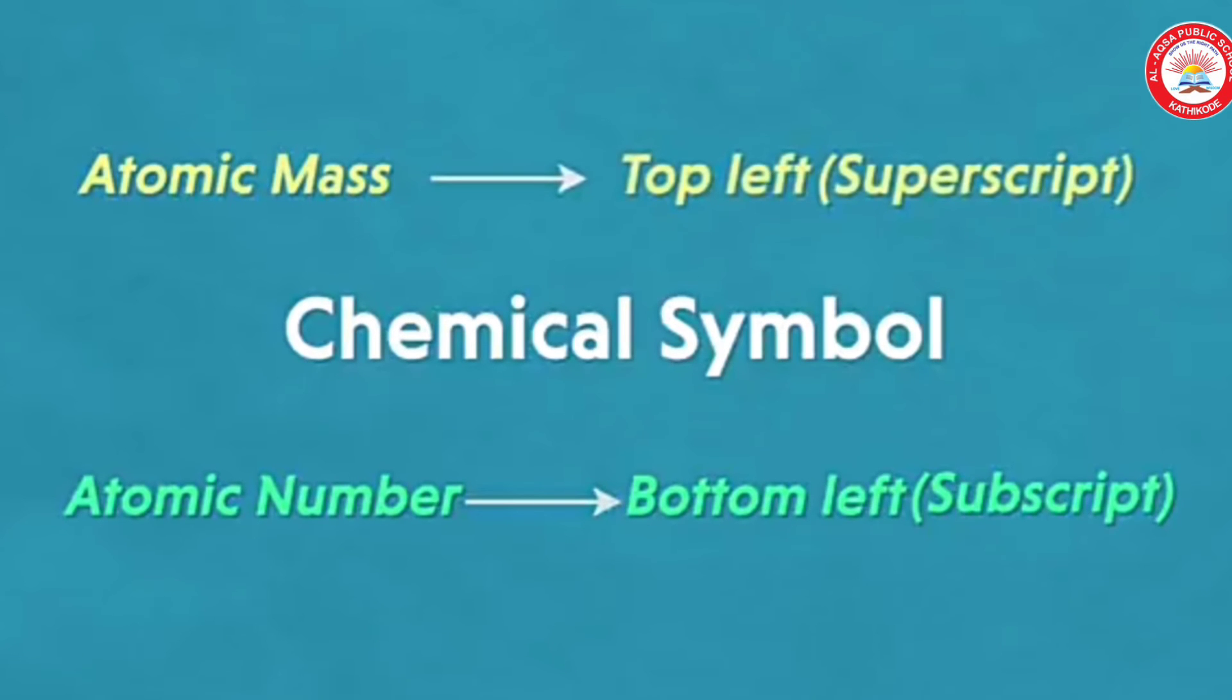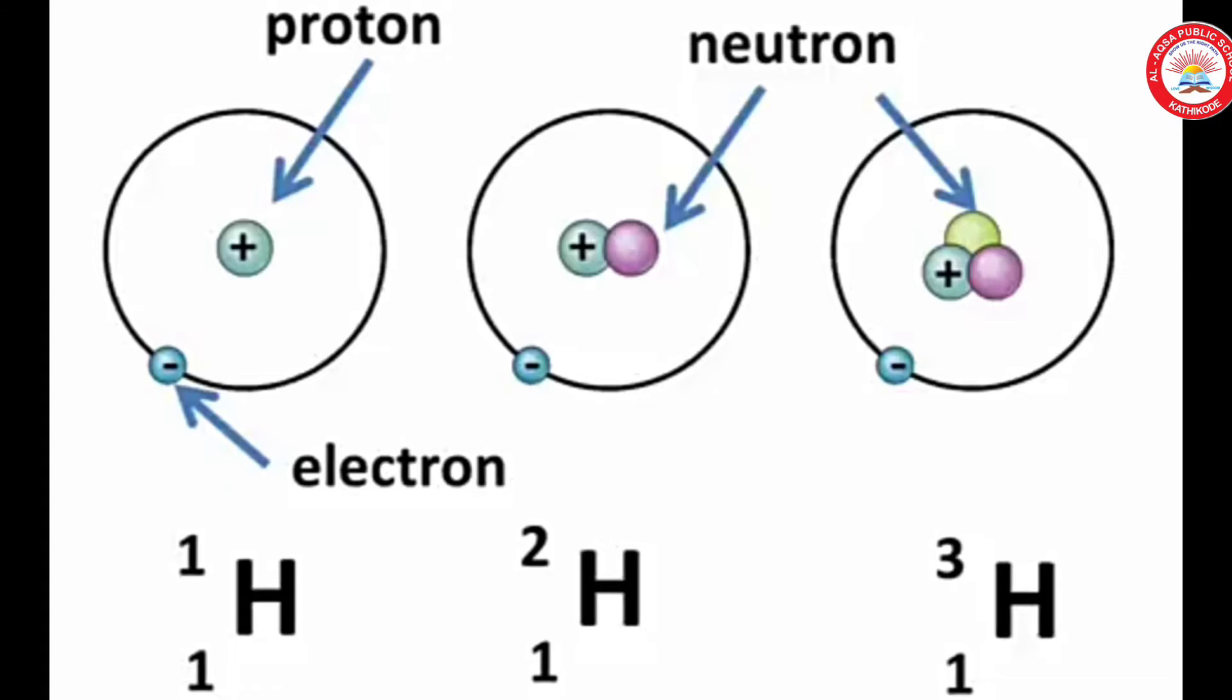Then how can we represent an element? First we have to write the symbol and atomic mass at top left and atomic number at bottom left. In nature, a number of atoms of some elements have been identified which have the same atomic number but different mass numbers.